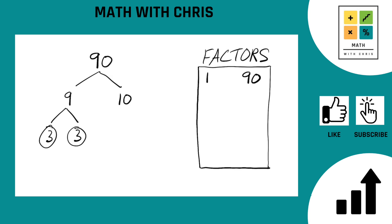What about 10? Can 10 be broken down further? It indeed can. 10 is 2 times 5. Is 2 a prime number? Absolutely. Is 5 a prime number? Absolutely. Circle them.